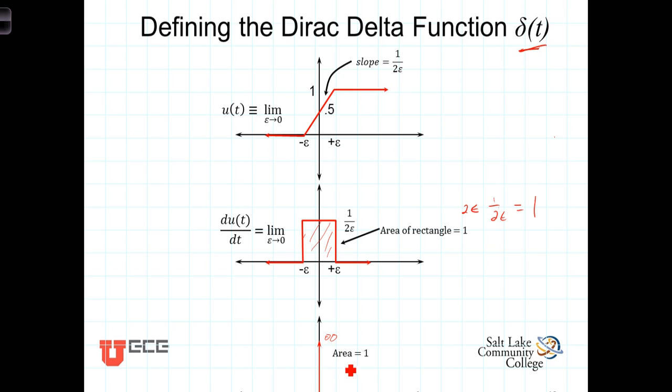We now then can define the delta function delta of t is equal to the limit as epsilon approaches zero of the derivative of the unit step function with respect to time.